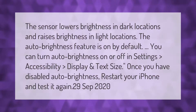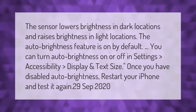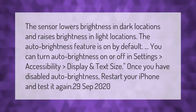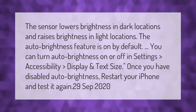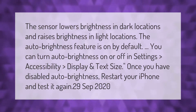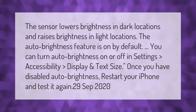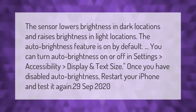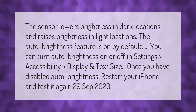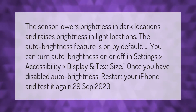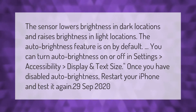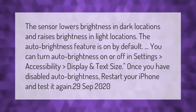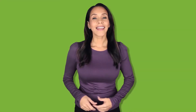The sensor lowers brightness in dark locations and raises brightness in light locations. The auto-brightness feature is on by default. You can turn auto-brightness on or off in Settings > Accessibility > Display and Text Size. Once you have disabled auto-brightness, restart your iPhone and test it again.